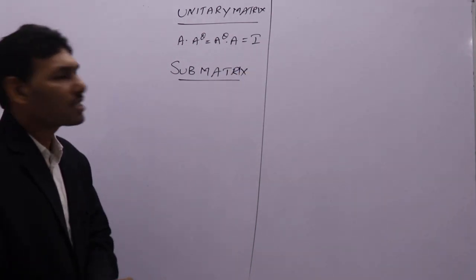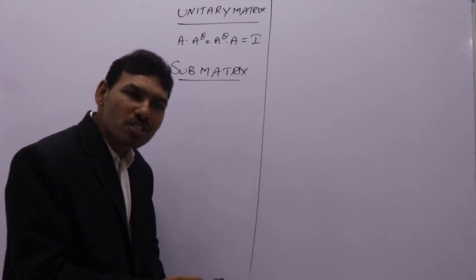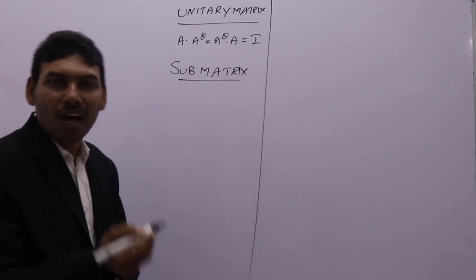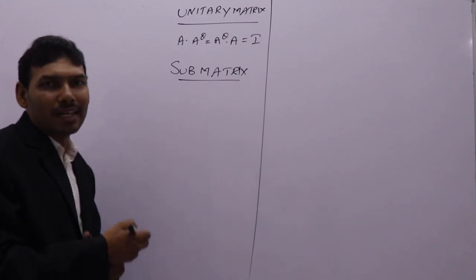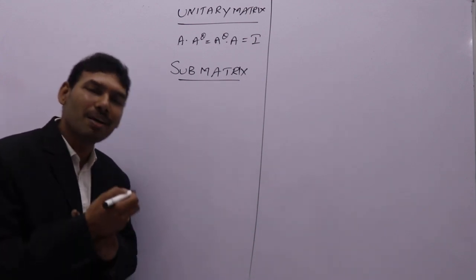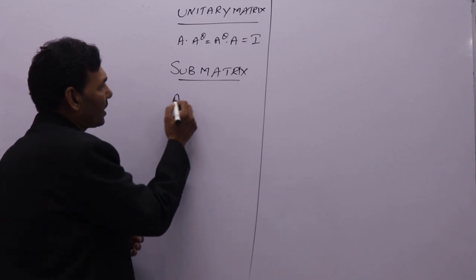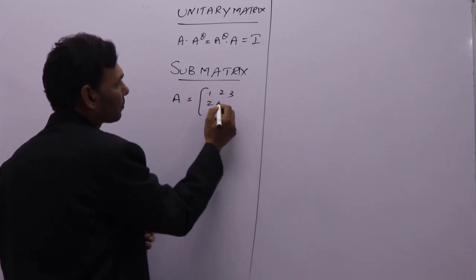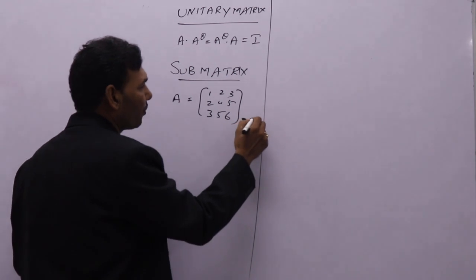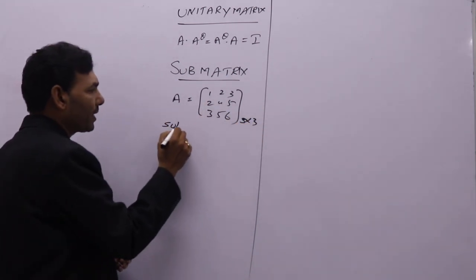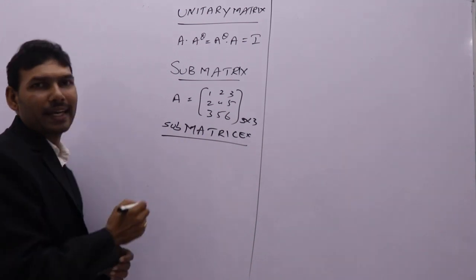Sub-matrix is the matrix obtained from the actual matrix by deleting some rows or some columns or both. We call that one a sub-matrix. For example, A is a 3 by 3 matrix. If you delete one row, we can get sub-matrices. If you delete one column, you will also get sub-matrices. So if I delete the first row, what you will get?